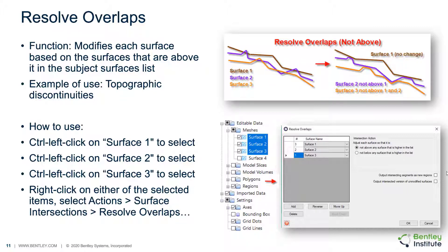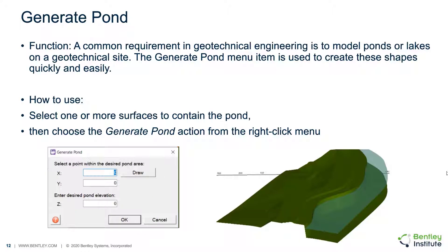The user may select to adjust each surface such that it is not above or below any surface that is higher in the list. A common functionality in geotechnical engineering is to model lakes or ponds at a particular site. The Generate Pond menu item can be utilized to create a surface water table in an abbreviated fashion by first selecting a point within the desired pond area at an elevation below the pond surface, either through the CAD interface or by entering coordinates in the dialog.